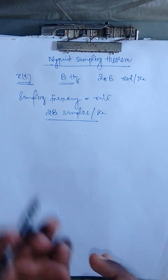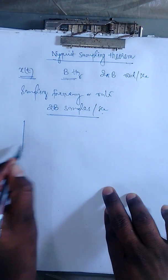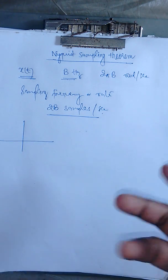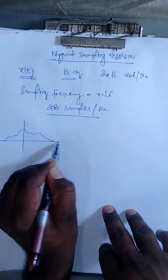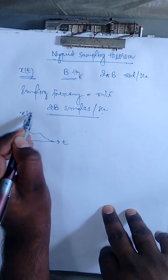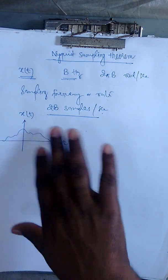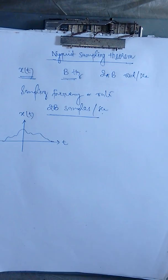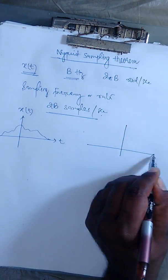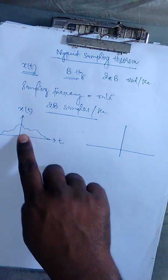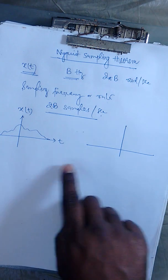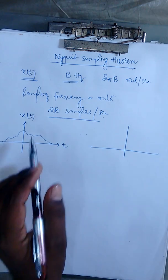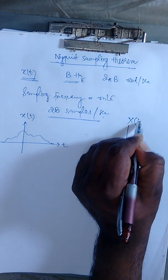We need to take at least 2·beta samples per second so that while reconstructing, we can recover the original analog continuous time signal. Let us now see how this 2·beta number comes about. Suppose we draw the time domain function x(t) as some arbitrary signal. It must have a certain frequency spectrum, which is essentially the Fourier transform of this signal.